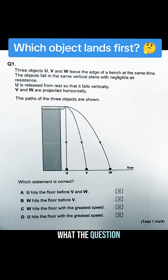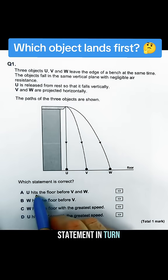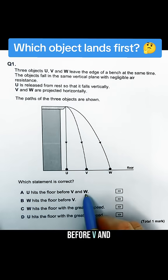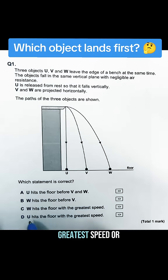Which statement is correct is what the question is asking us. If we look at each statement in turn, it says U hits the floor before V and W, W hits the floor before V, W's got the greatest speed, or U's got the greatest speed.